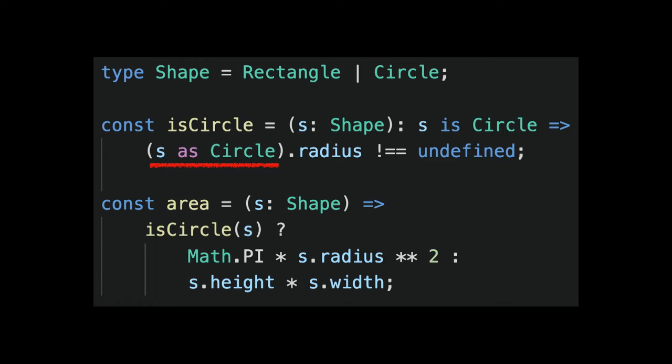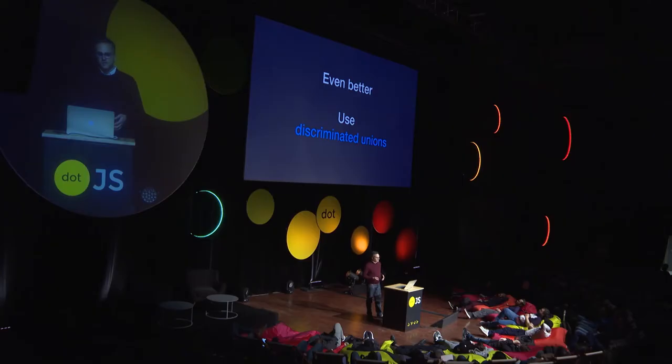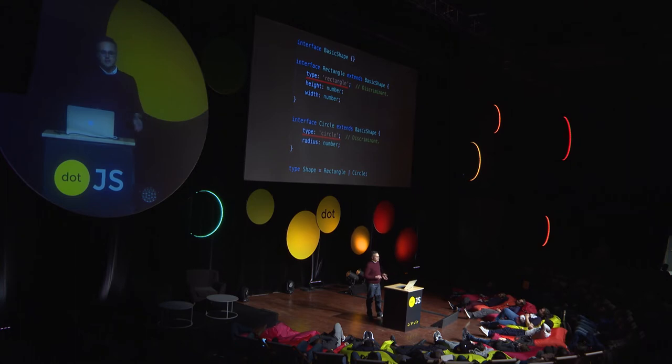But even here we are not too happy, because a type guard uses a cast. So to improve it, we can use discriminated unions. Circle has a type field circle, and rectangle has a type field rectangle.